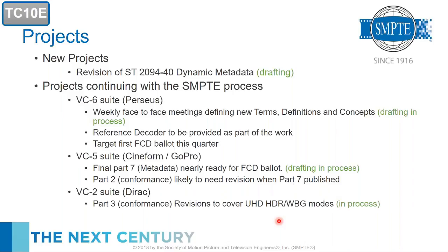If you're interested in compression, please join the VC-6, VC-5, or VC-2 projects — we need more compression experts to help make the documents better. The drafting group has promised to make a reference decoder available as part of the work. Literally just before this webcast we were finishing up the VC-6 meeting, and it looks like we're on schedule to get a document ready for its first ballot this quarter.